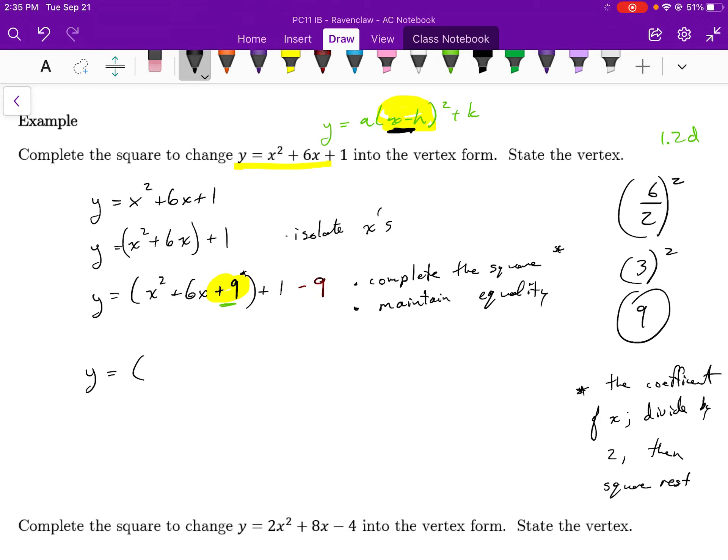The next step I'm going to do is I factor the perfect square factor. So x squared plus 6x plus 9 is x plus 3 squared. And then I collect like terms, plus 1 minus 9 is minus 8. So I would just say factor and simplify.